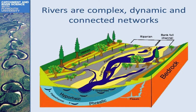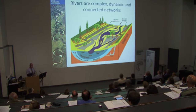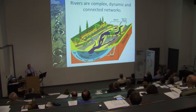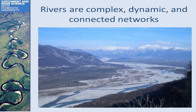These ecosystem attributes bring about multiple benefits, or what we would call in modern parlance, ecosystem services. This is at the reach scale, and the same is true at the larger scale from the source to the sea — they're complex, dynamic, and connected landscapes, and these landscapes should be of value to society.